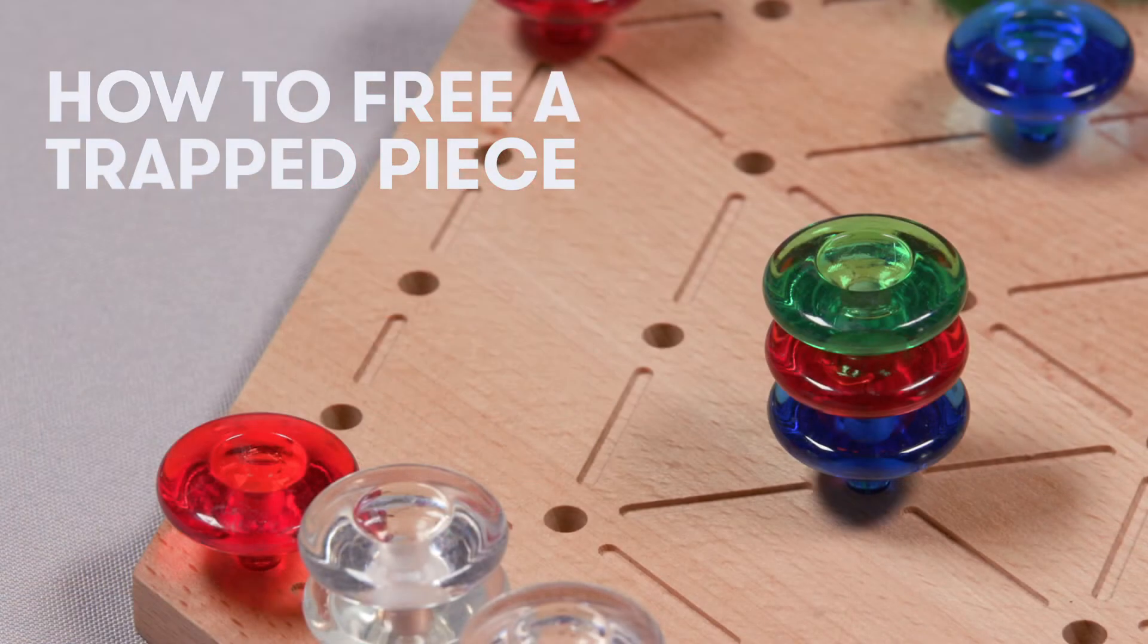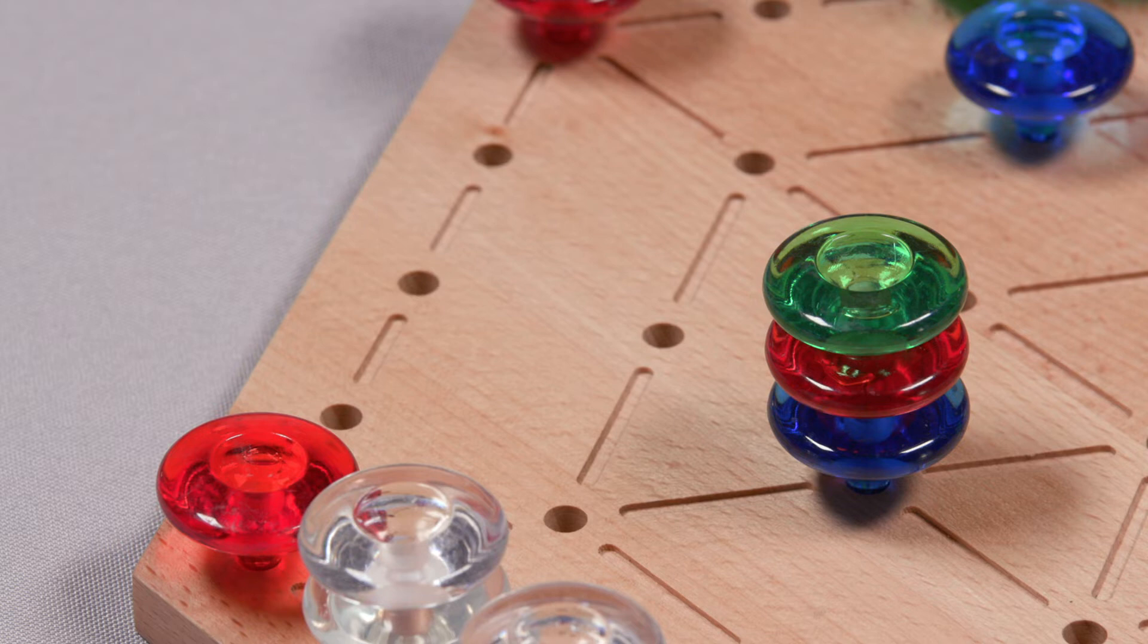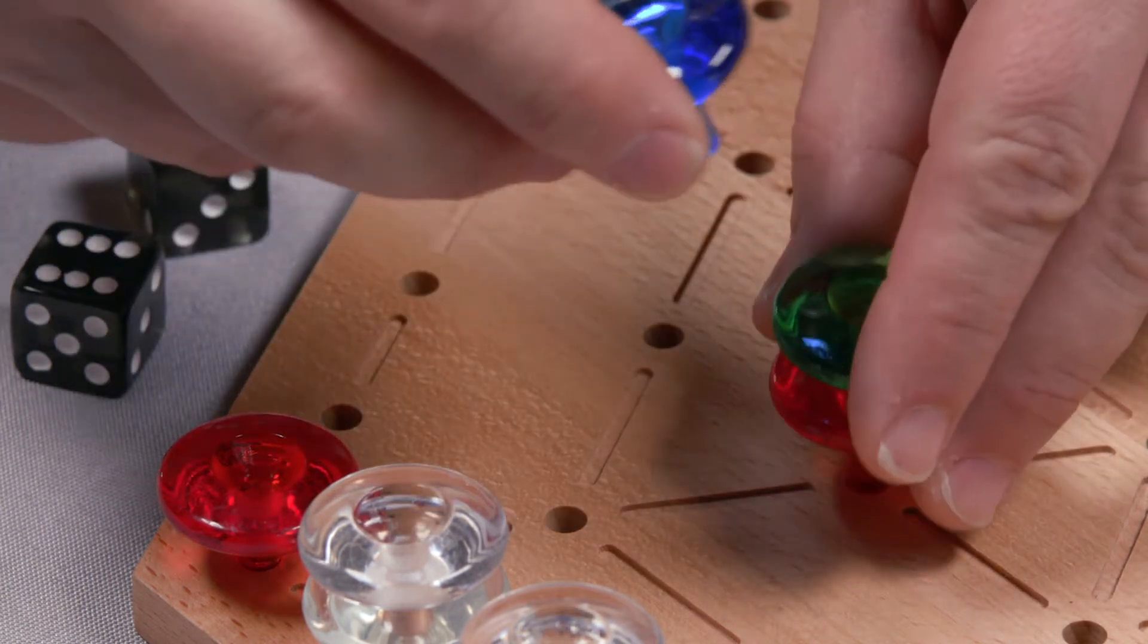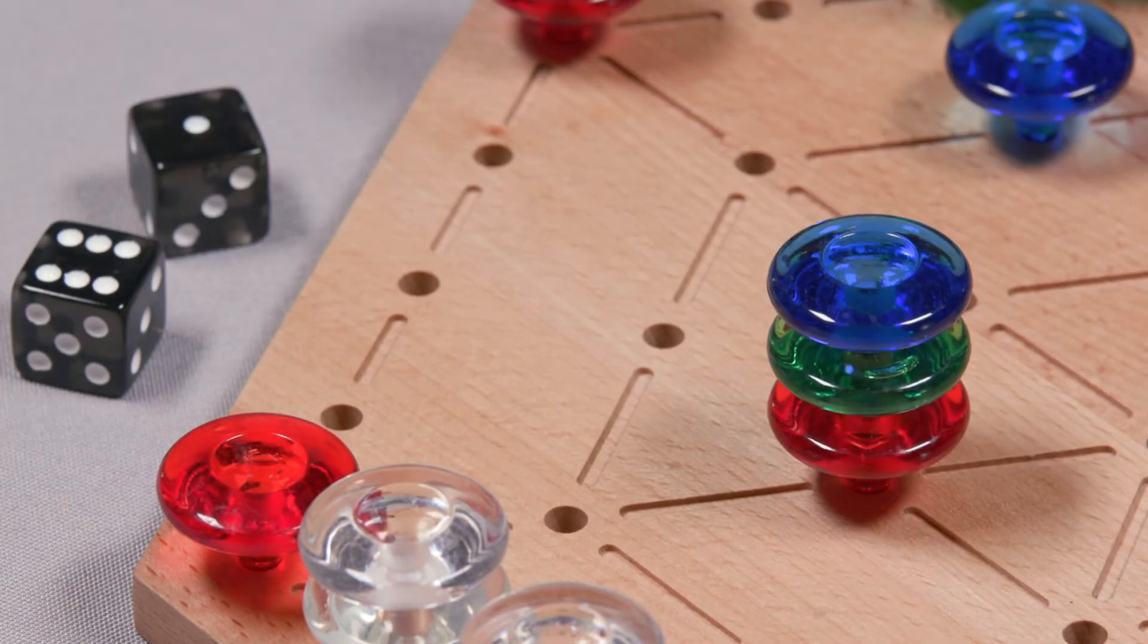On your turn, if you are involved in a trap as the trapped or the trapping player, you may roll the dice and instead of making a move, change one trap by switching the order in which the pieces are stacked.